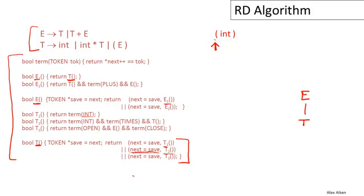After T2 fails and the input pointer is restored, T3 is tried. When we finally get to T3, something good happens — the first thing it does is ask whether the first thing in the input is an open paren. And indeed it is. So the input pointer advances to point to the int.